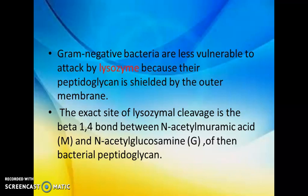Gram negative bacteria are less vulnerable to lysozyme because the peptidoglycan is shielded by an outer membrane, which protects it from lysozyme attack. The exact site of lysozyme cleavage is the beta-1,4 bond between N-acetylmuramic acid and N-acetylglucosamine of the bacterium.